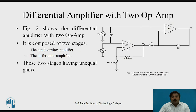Now let's start with the differential amplifier with 2 Op Amps. As you can see, it has 2 op-amps: A1 and A2. This figure shows the differential amplifier with 2 op-amps. There are 2 inputs, Vx and Vy. Vx is connected to A2 at the non-inverting terminal, and Vy is connected to A1 at the non-inverting terminal.